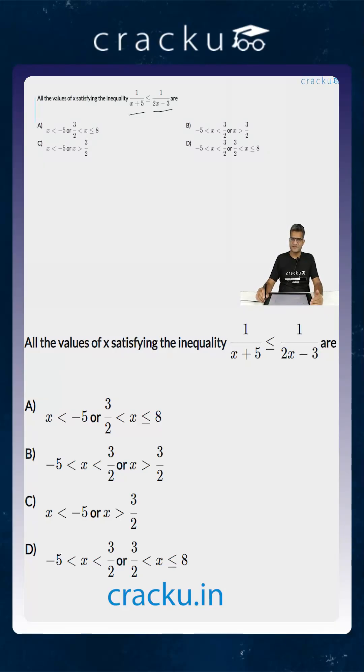Because x+5 is in the denominator, x cannot be equal to -5, as then we'll have 0 in the denominator. Similarly, 2x-3 cannot be equal to 0, so x cannot be equal to 3/2.